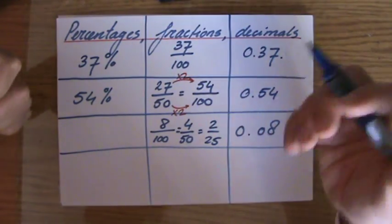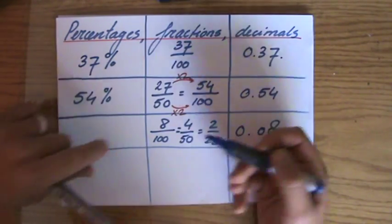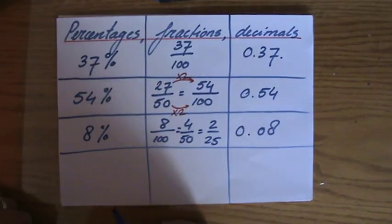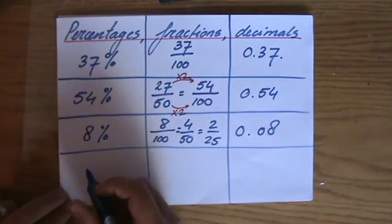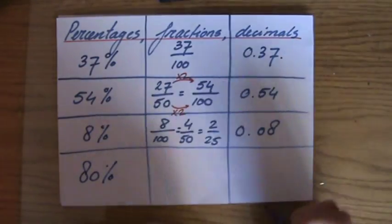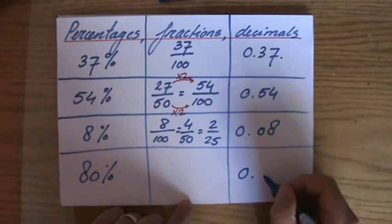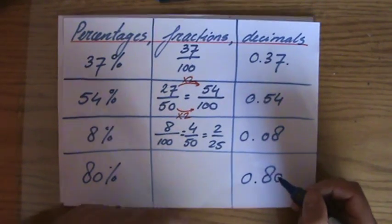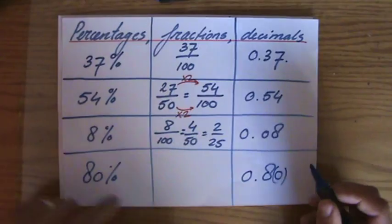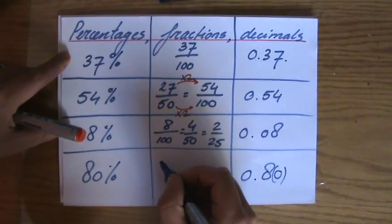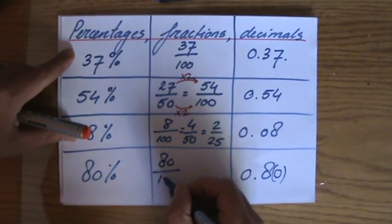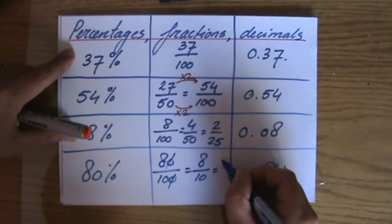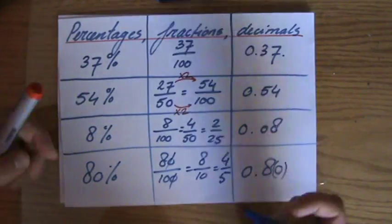But what is it as a percentage? Well, a percentage is out of 100, so that will be 8%. Not 80%, because 80% as a decimal would be 0.8, or 0.80, if you like. But you don't really have to write that one. As a fraction, that will be 80 out of 100. And if I simplify that, 8 over 10, so 4 over 5.